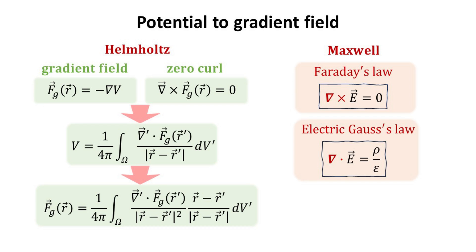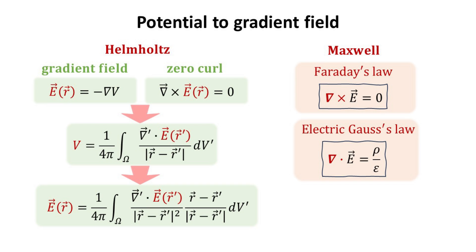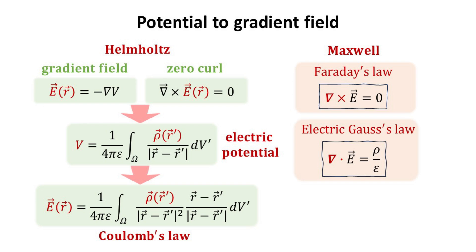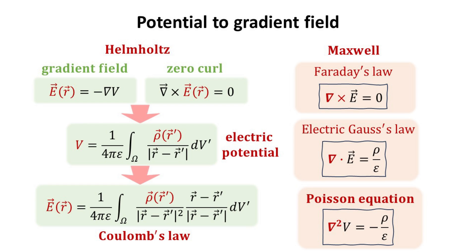Now we are ready to make the connection to Maxwell's equations. We have Faraday's Law and the Electric Gauss's Law. The former states that the electric field is a zero-curl field, so the electric field can be written as a gradient field. Gauss's Law states that the divergence of the electric field is given by the charge density. Thus, we arrive at the well-known form of the electric potential and electric field in terms of the charge density — the latter being the well-known Coulomb's Law. Written in this form, it is intuitively clear that the charge density is the source of electric fields. Using the definition of the gradient field, Gauss's Law can be written as the Laplacian of the electric potential — this equation is the well-known Poisson equation. In summary, we have here the key equations in electrostatics.